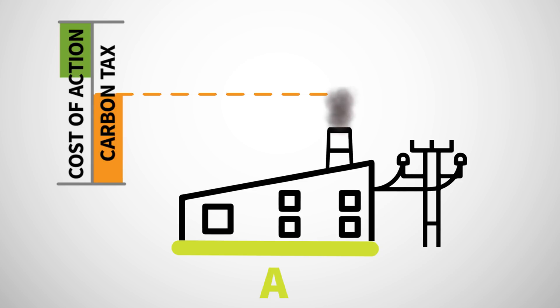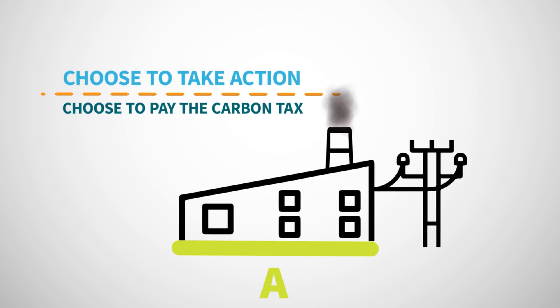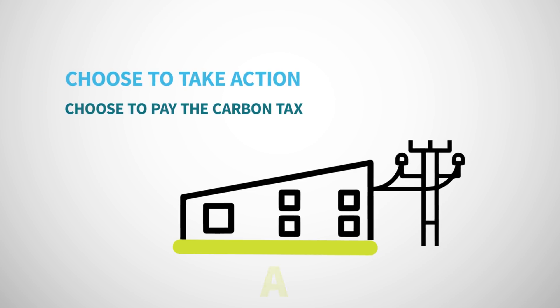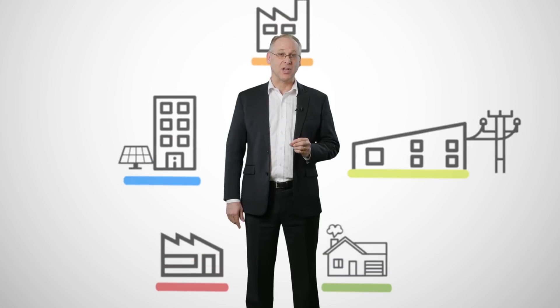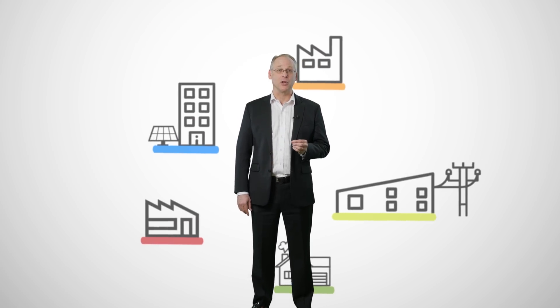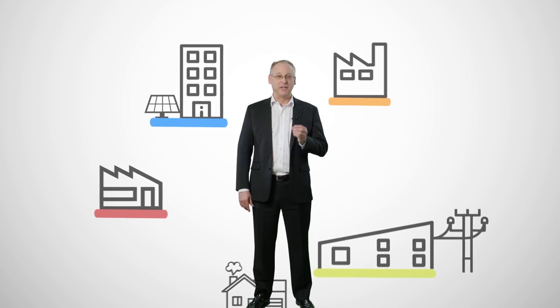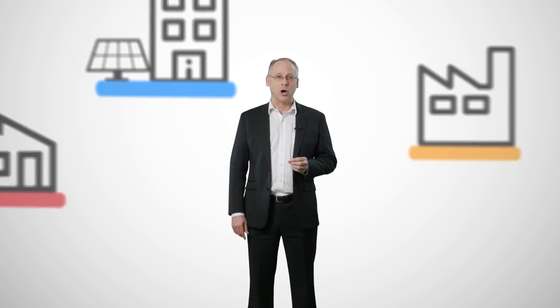However, it still has some remaining emissions. For these emissions, it's cheaper to pay the carbon tax than making changes to reduce them. All businesses do this kind of calculation, but with different results. The flexibility that the carbon tax provides of when and how to reduce emissions sets a carbon tax apart from more inflexible regulations.